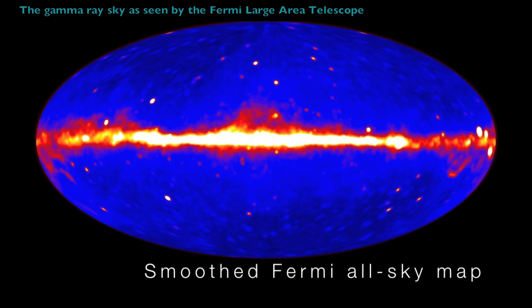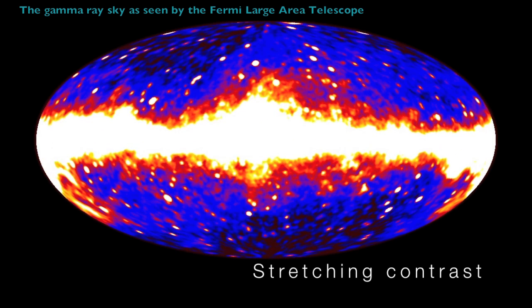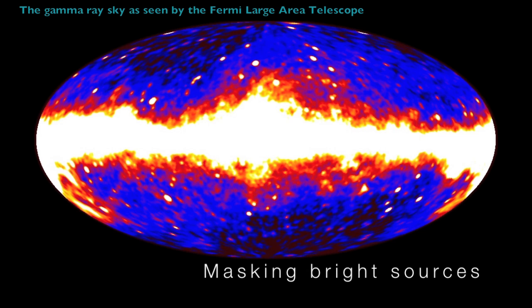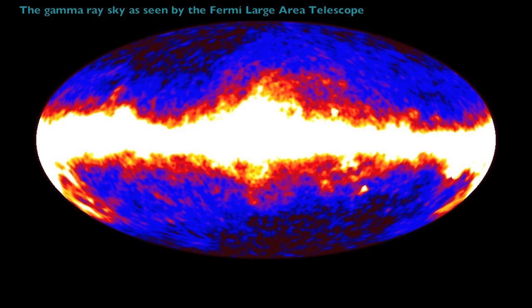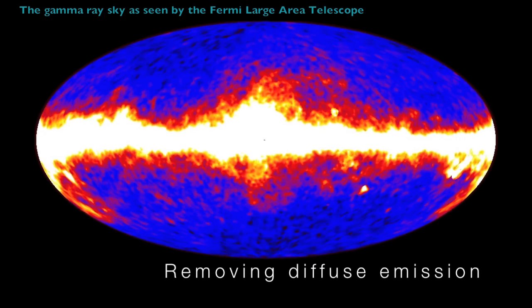Astronomers hadn't detected these sooner partly because of a fog of gamma rays that appears throughout the sky. This fog is the result of highly energetic particles moving near the speed of light and interacting with interstellar gas in the Milky Way.